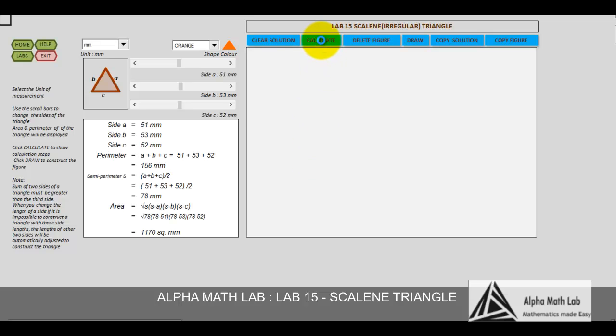Click Calculate. Here Side A 51, Side B 53, and Side C 52. The perimeter is equal to 156. Semi-perimeter, which means half of perimeter S, is 78mm. And we use the formula: area equals square root of S times S minus A times S minus B times S minus C. And finally we get the area of the triangle as 1170 square millimeter.